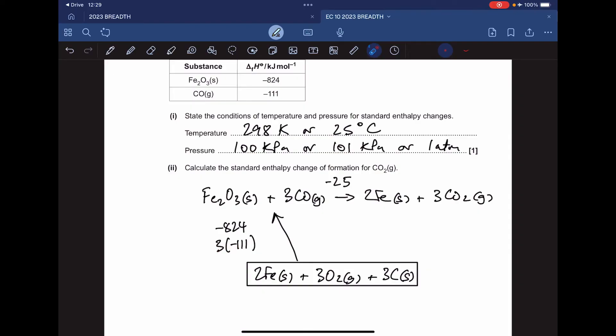So minus 824 kilojoules per mole to form one mole of Fe2O3 from its elements, and three times minus 111 to form three moles of carbon monoxide from its elements in the box here. On the other side, we need this arrow to represent the enthalpy change of formation of those three moles